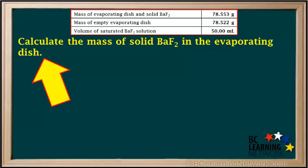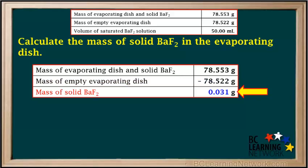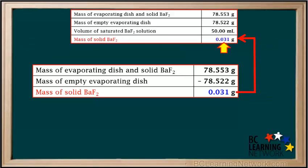We start by calculating the mass of solid BaF₂ in the evaporating dish — this is the mass of BaF₂ that was dissolved in the 50 milliliter sample of the original saturated solution. To do this, we take the mass of the evaporating dish with solid BaF₂ and subtract the mass of the empty evaporating dish, giving us 0.031 grams of solid BaF₂. We add this to the data table.